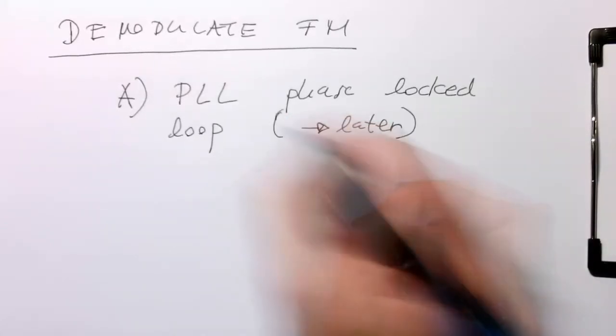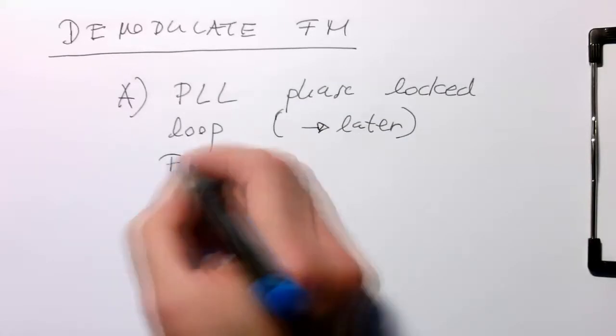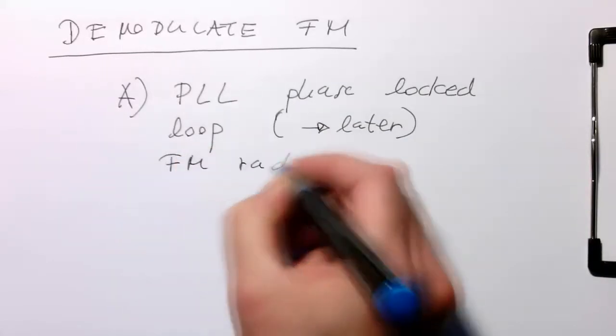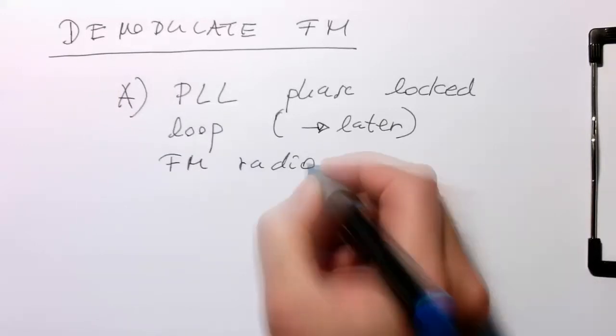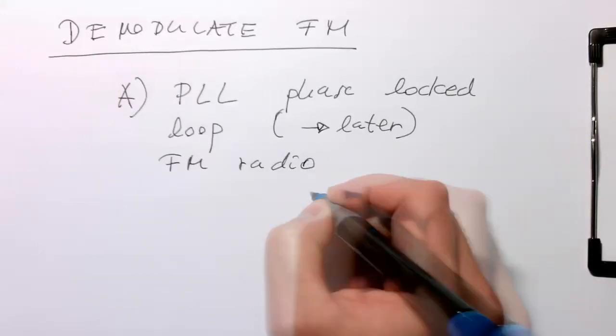It's used in FM radio, for example, in analog radio. But in general, a phase-locked loop is quite complex.